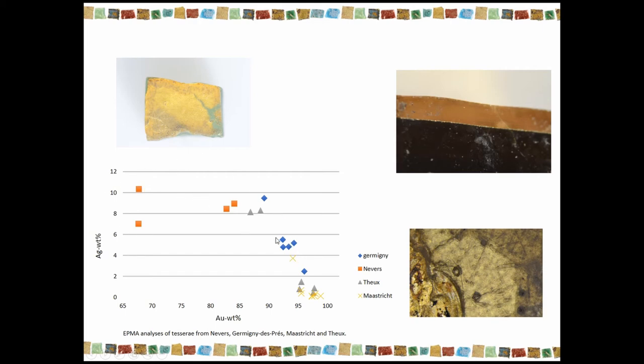Then the gold of Germigny-des-Prés contained a lot of silver, and the sheets are also thicker, about 4 micrometers, while the other sheets are more thin than 1 micrometer. And so, we've got small differences between the sets.